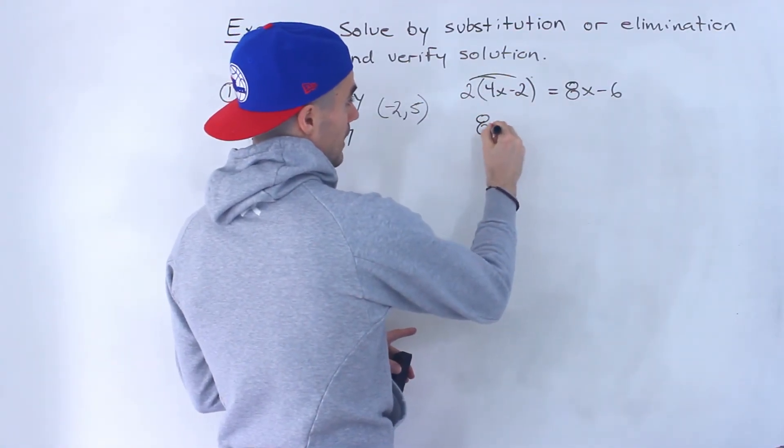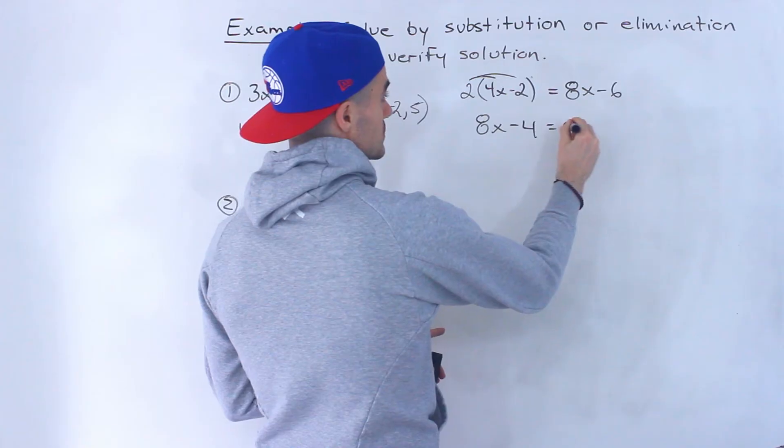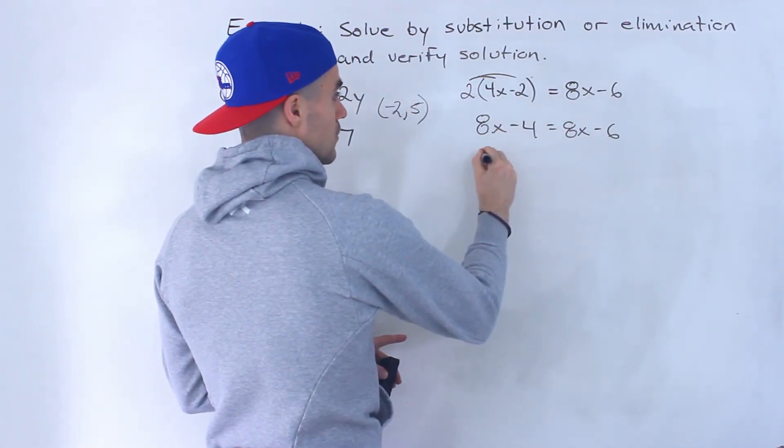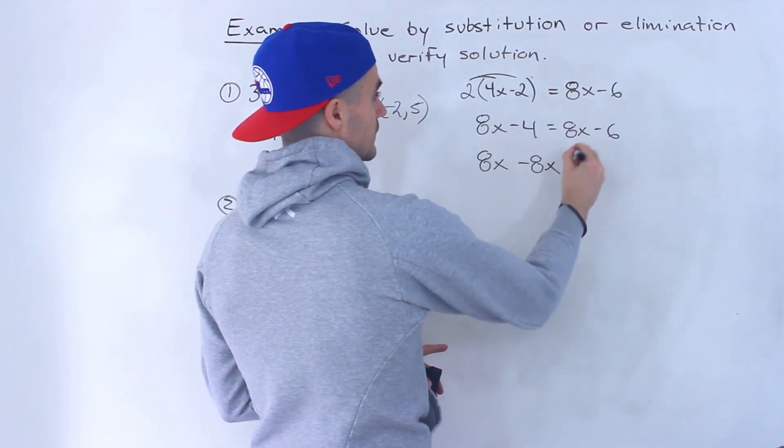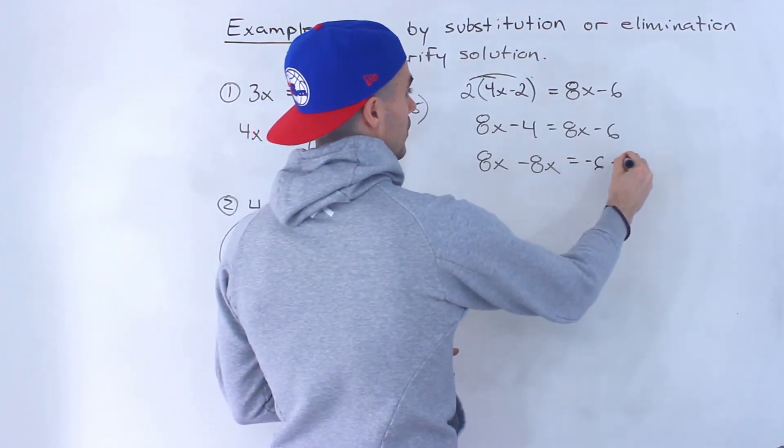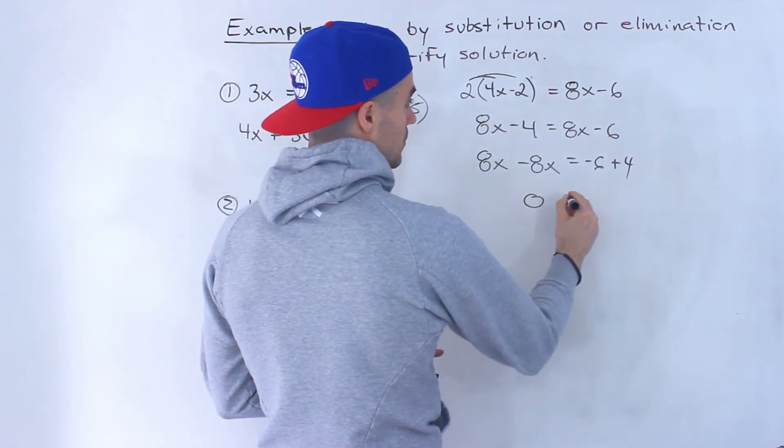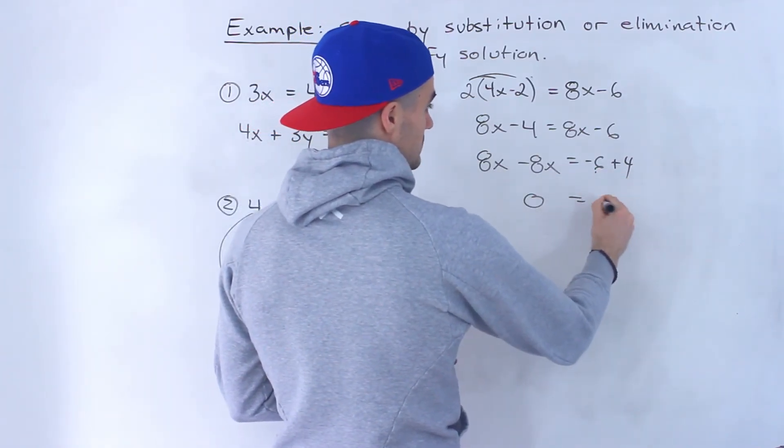So we can distribute. So we would have 8x minus 4 equals 8x minus 6. Bring the 8x over and then bring the negative 4 over. And what are we going to get? 8x minus 8x is 0. Negative 6 plus 4 gives us negative 2.